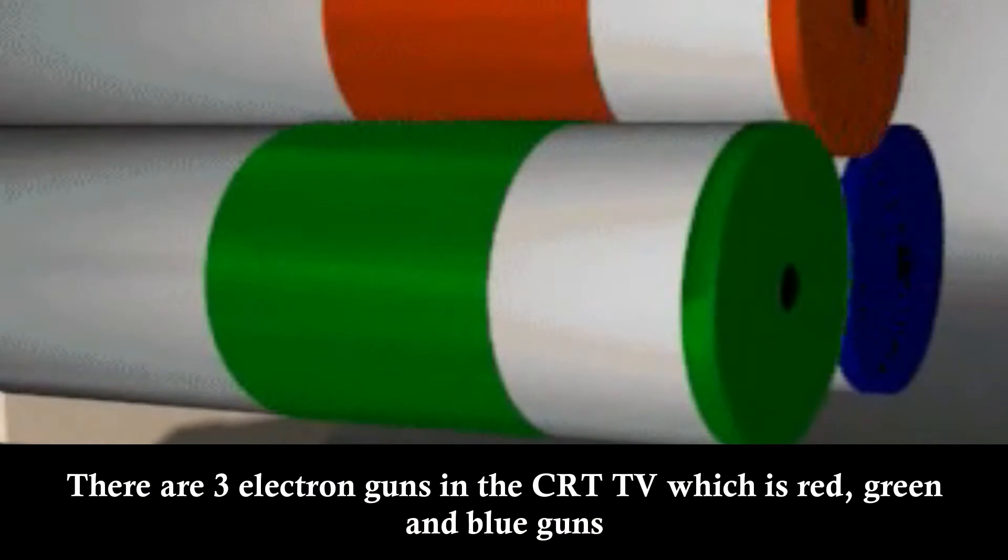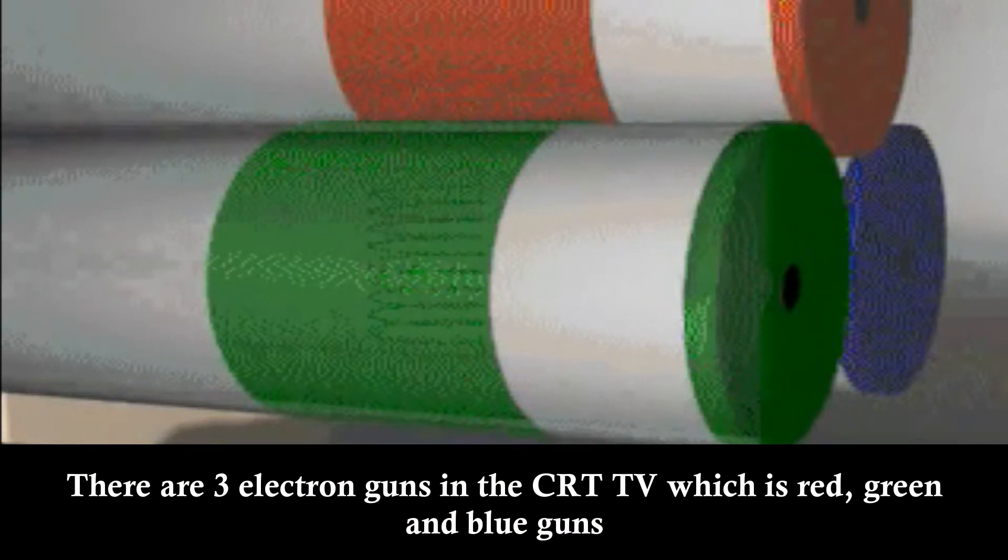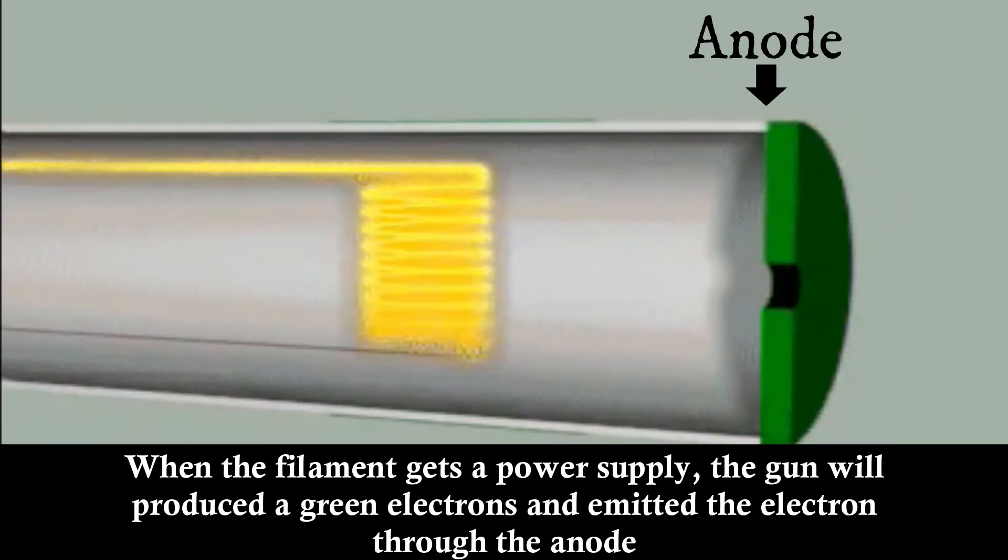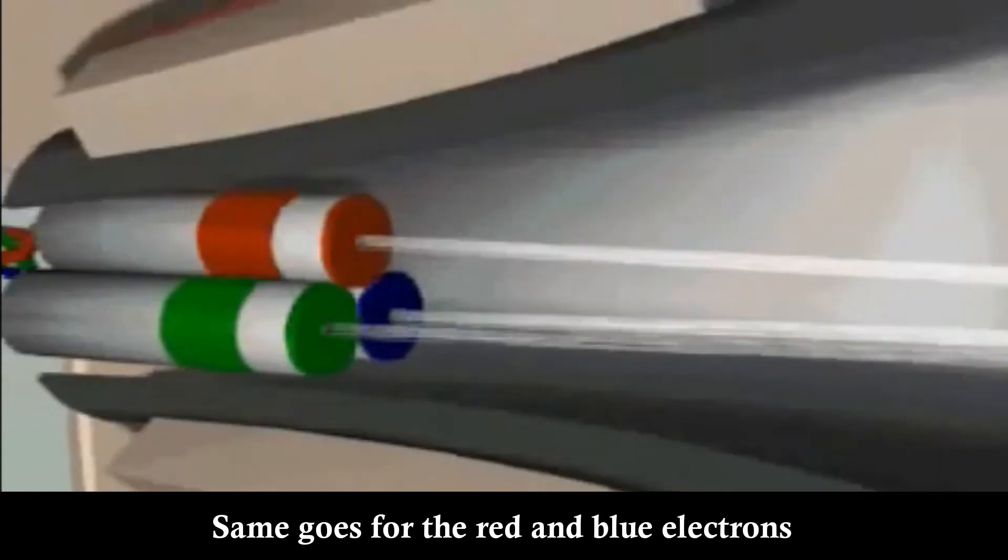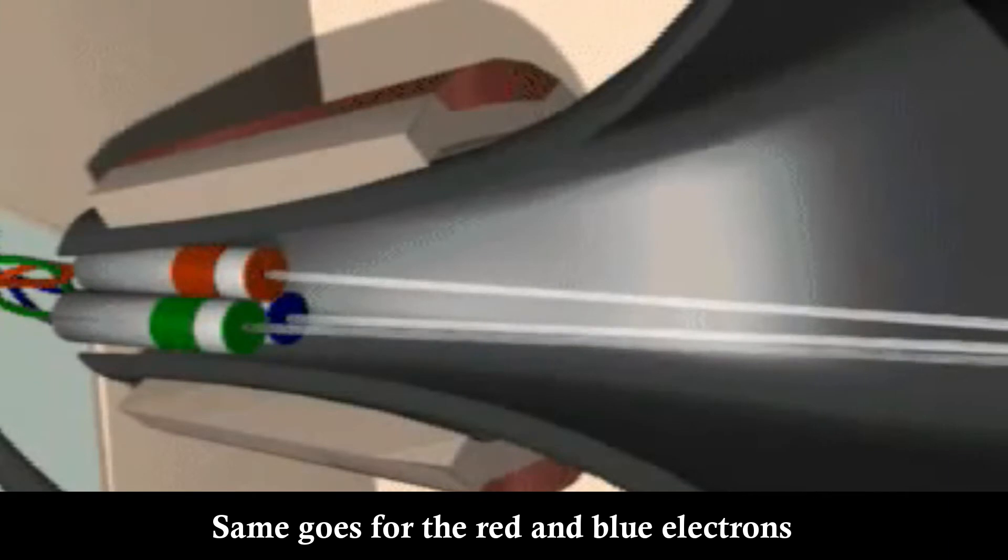There are three electron guns in the CRT TV: red, green, and blue guns. When the filament receives a power supply, the gun produces electrons and emits them through the anode. The same process occurs for the red and blue electrons.